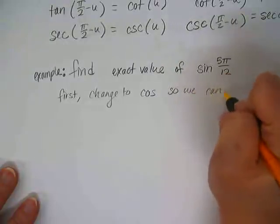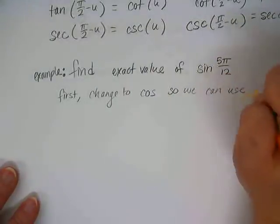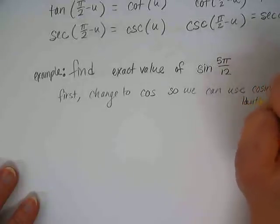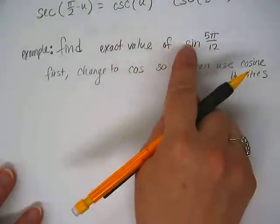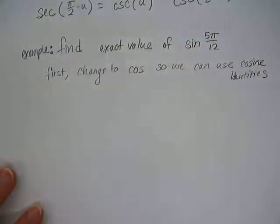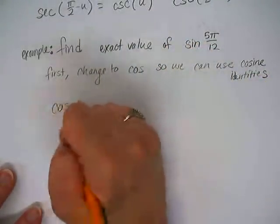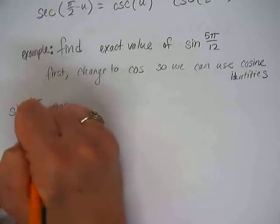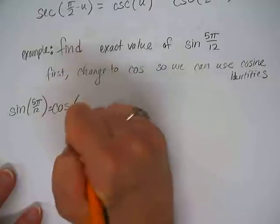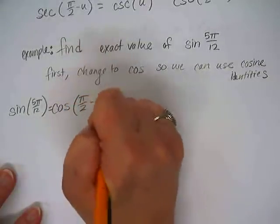First, change to cosine so we can use cosine identities. Right? Okay. So how do we change sine of 5 pi 12th to cosine instead? Cosine of 9 minus 5 pi 12th.